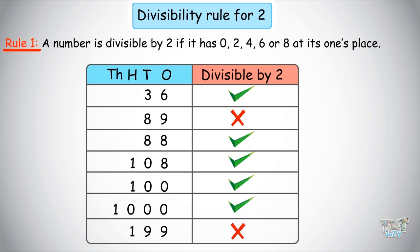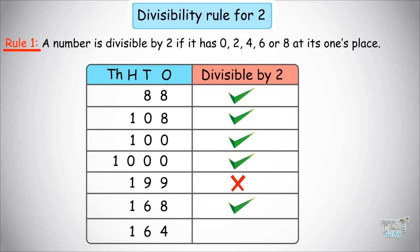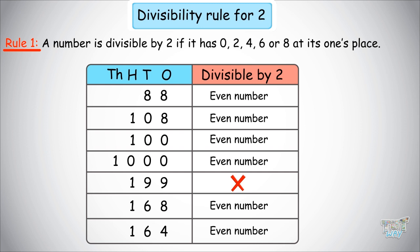199 — no, because there is a 9 in the ones place. 168 — this is also divisible by 2 because there is an 8 in the ones place. 164 — this is divisible by 2 because the ones place digit is 4. All the numbers divisible by 2 are called even numbers. All the numbers that end with 0, 2, 4, 6, and 8 are known as even numbers.